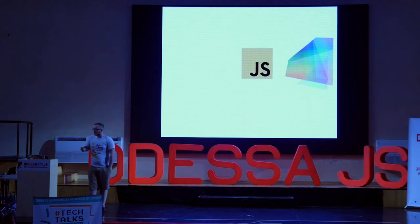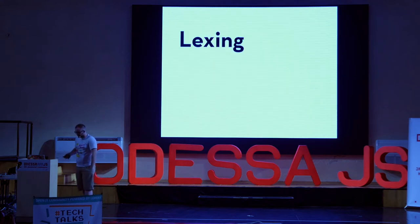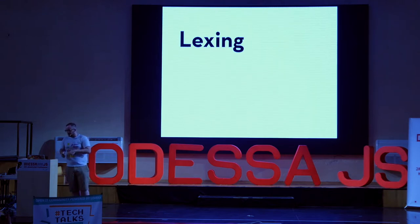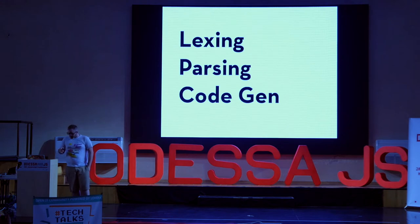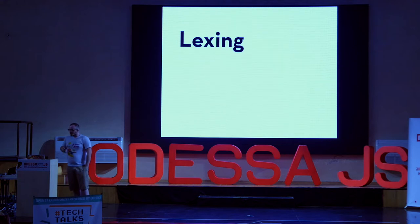And the way that works is through JavaScript transpilation. For those who are unfamiliar with transpilation, it's a concept of converting one language to another, and it breaks down into three main parts: lexing, parsing, and code generation. Just to make sure we're all on the same page, I'm going to give a high-level overview of what those different steps mean. We'll start, of course, with lexing.